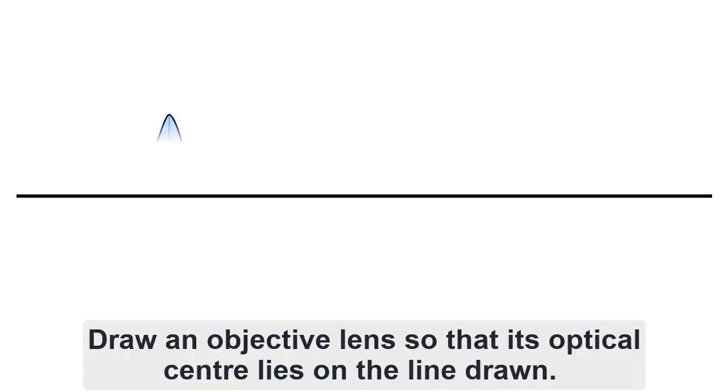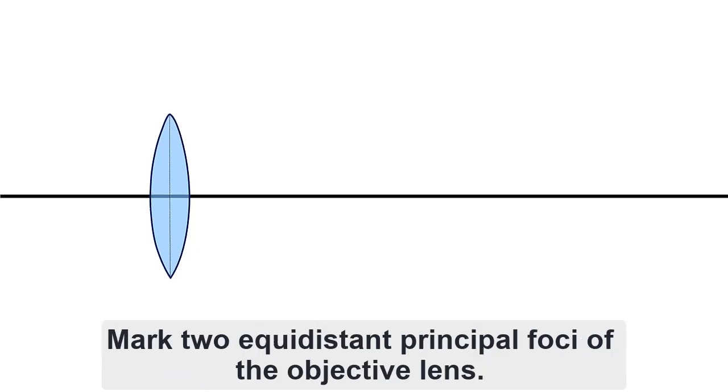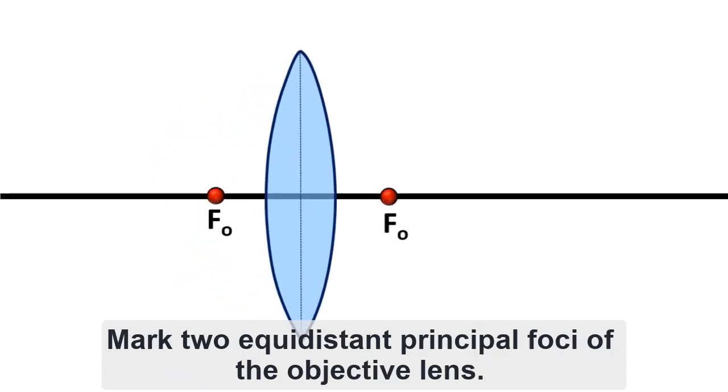Draw an objective lens so that its optical center lies on the line drawn. Mark two equidistant principal foci of the objective lens.